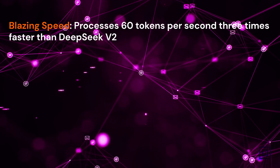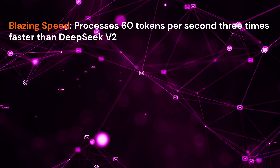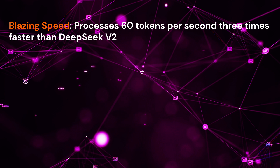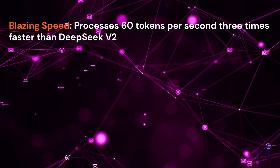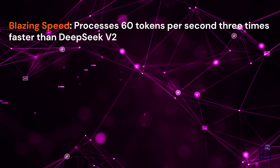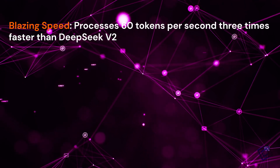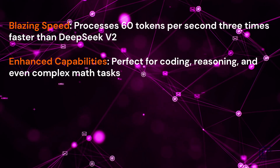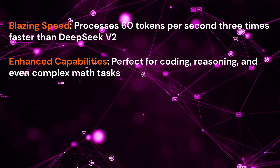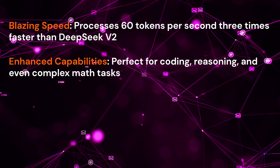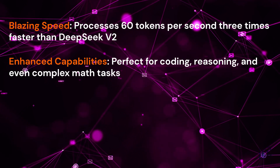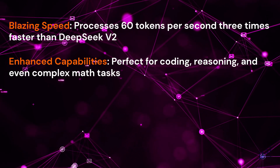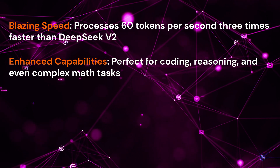Blazing speed: it processes 60 tokens per second, three times faster than DeepSeek V2. Enhanced capabilities make it perfect for coding, reasoning, and even complex math tasks.